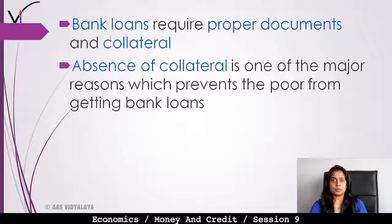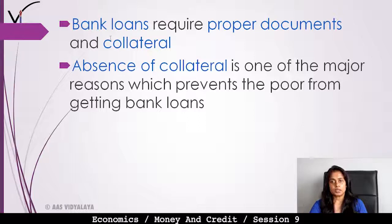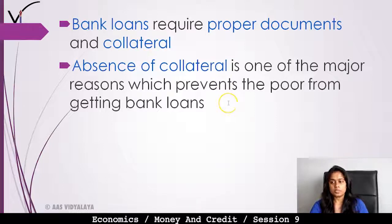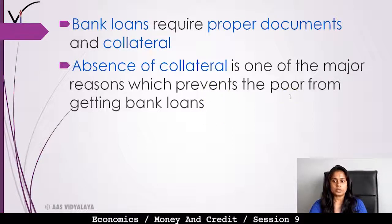People who don't have proper documents and don't have any collateral find it almost impossible to get loans from banks. Absence of collateral is one of the main reasons why poor people don't get bank loans.